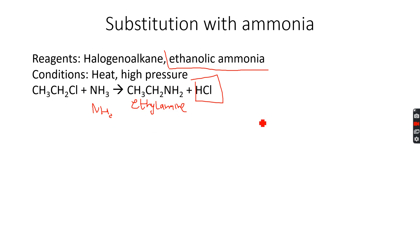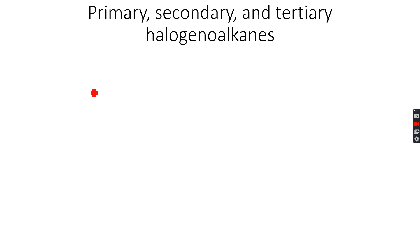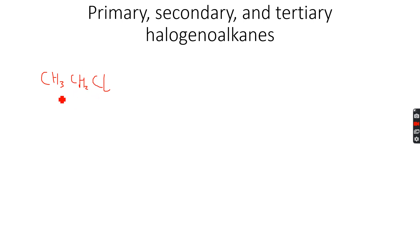This is how you get an amine from a halogenoalkane using these reagents and conditions. Now, primary, secondary, and tertiary halogenoalkanes: CH3CH2CH2Cl, which is chloropropane, is a primary halogenoalkane because the alpha carbon atom attached to the chlorine is in turn attached to only one other carbon atom.